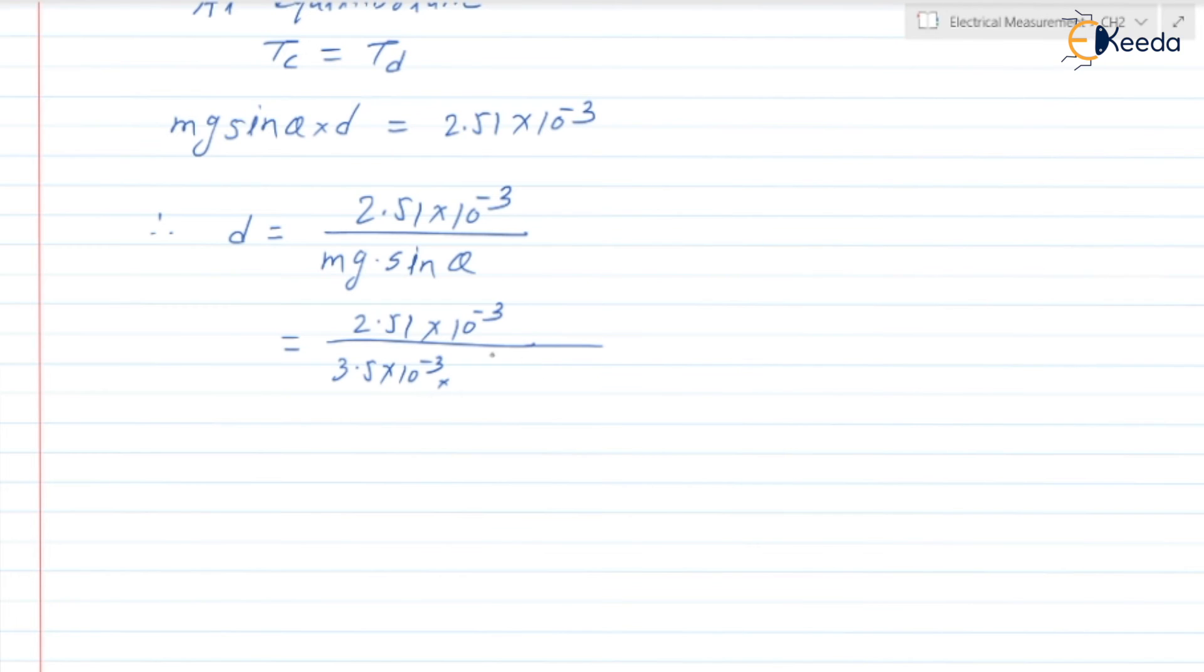Into g, the gravitational force 9.81, into sin theta. Theta is given, it is equal to 58 degree. So sin of 58 degree. Now if we solve, we can get the value of d.